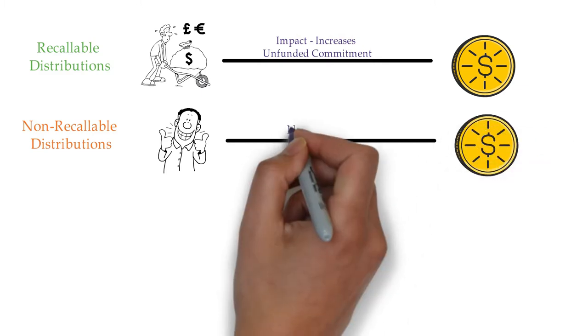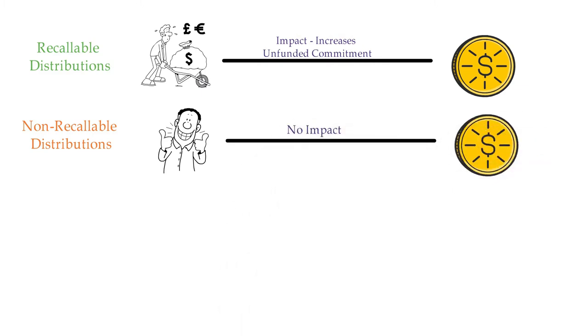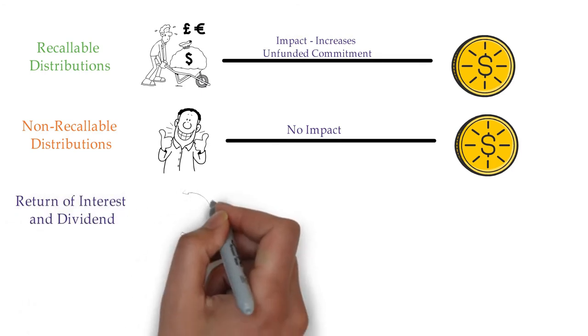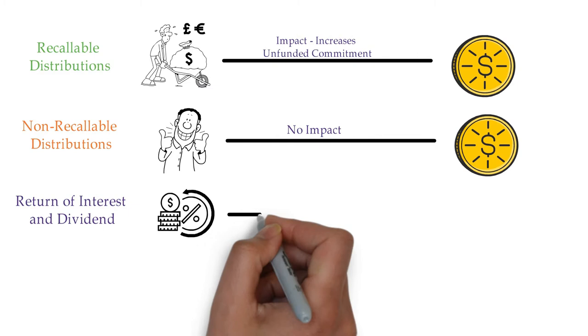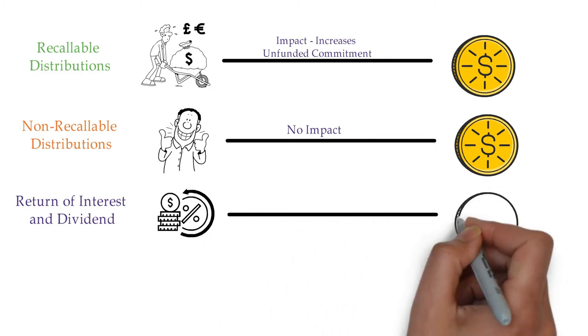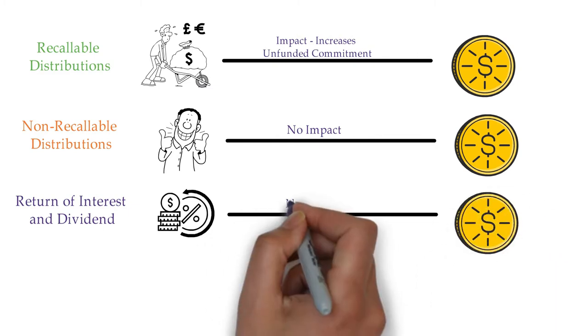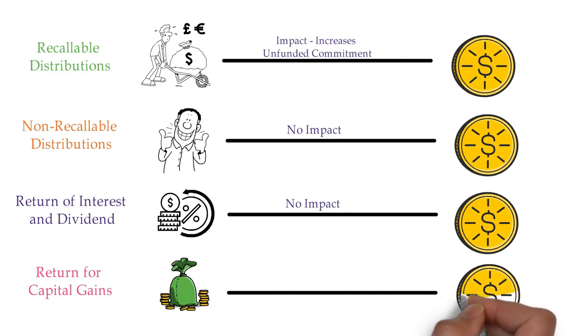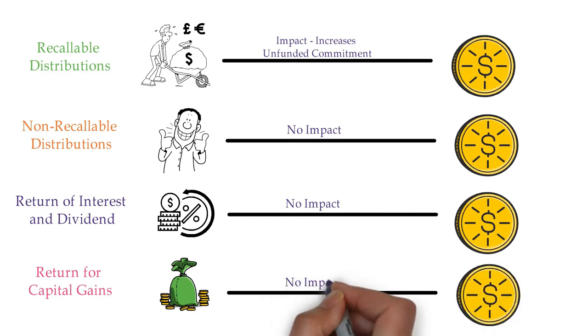Return of interest and dividend: the transfer of interest and dividend. It also doesn't have any impact on the unfunded commitment. Return for capital gains: the transfer of excess over cost portion which results from selling off any portion of the portfolio company. It also doesn't have any impact on unfunded commitment.